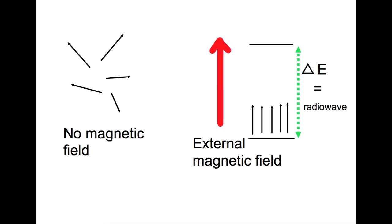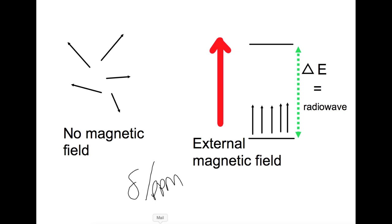The scale that we use for nuclear magnetic resonance is chemical shift, which is represented by delta and is measured in parts per million. It's measured as a shift from the standard tetramethylsilane, which is given the value zero. Solvents used for NMR must not contain any hydrogen and therefore are usually deuterated. A small amount of hydrogen is left in to allow us to calibrate the machine so that you know you're definitely getting the correct chemical shifts.